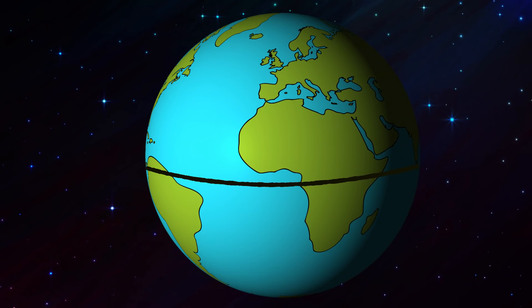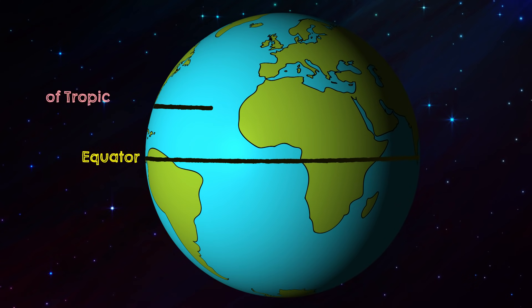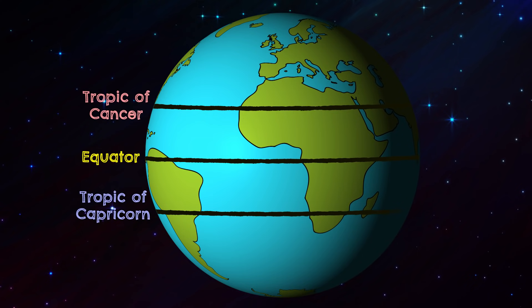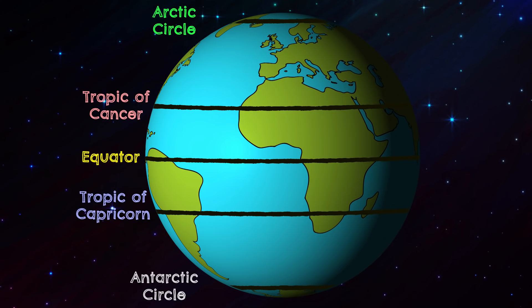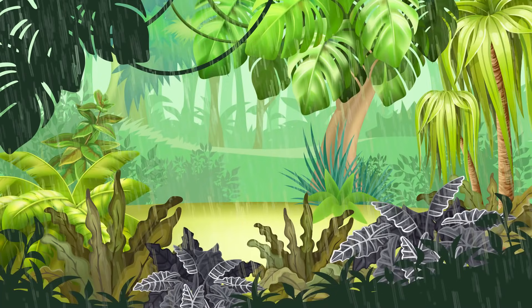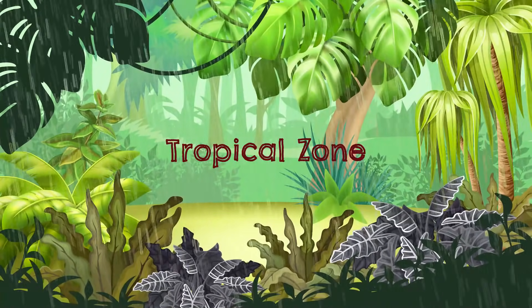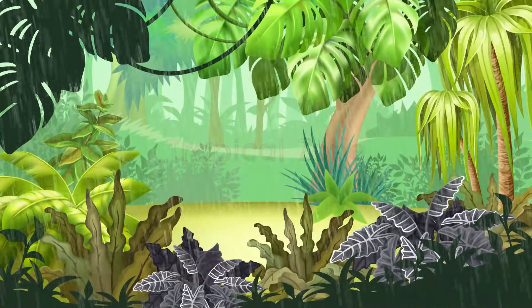Some other important latitudes are the Tropic of Cancer and the Tropic of Capricorn, also called the tropics, and the Arctic Circle and Antarctic Circle, which are also called the polar circles. These latitudes are important because they roughly define different climate zones based on how much sunlight each zone gets. The area between the two tropics gets the most direct sunlight and it's called the tropical zone, and the climate in many parts here tends to be warm and humid with lots of rain.